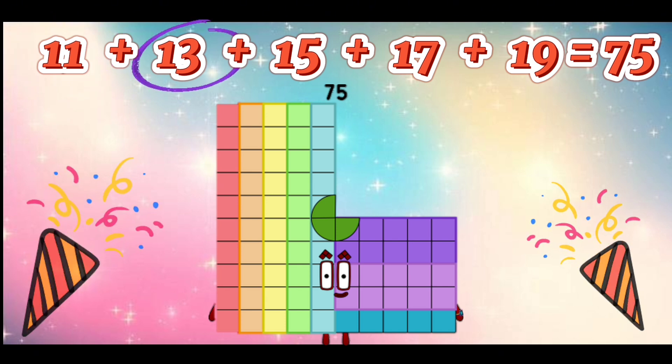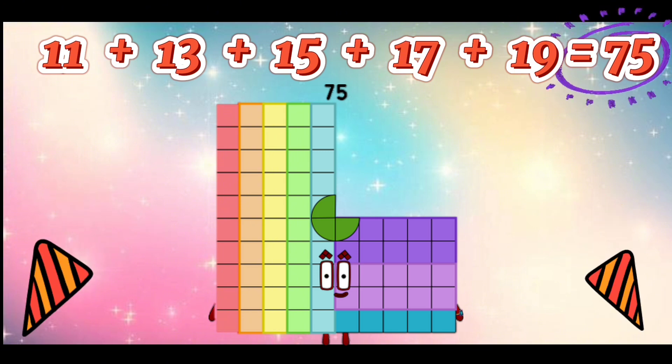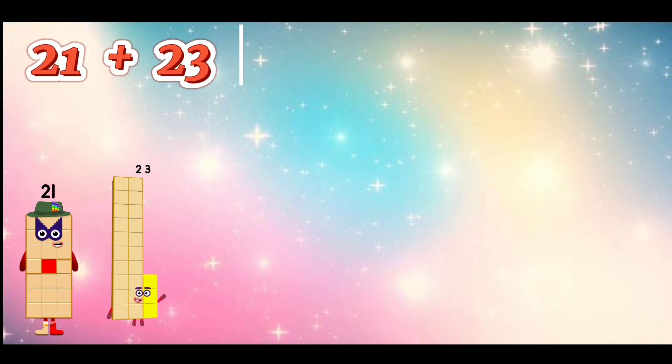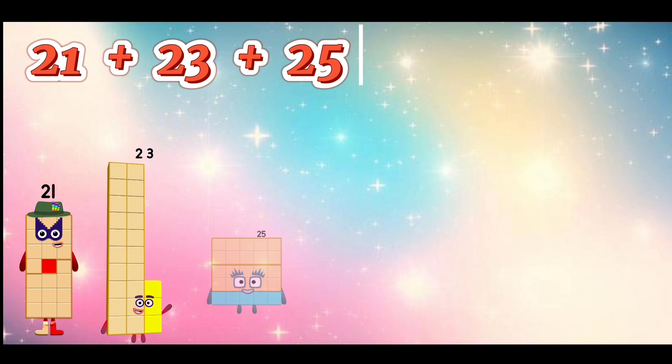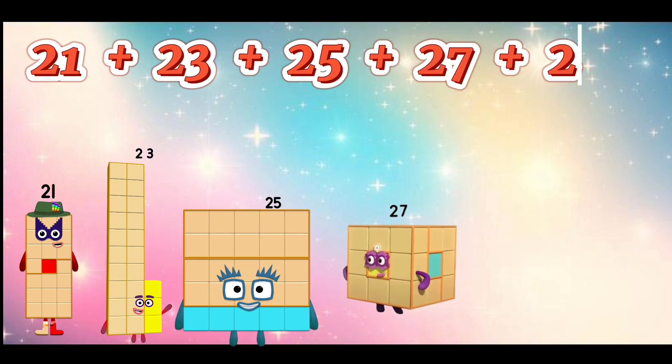Let's repeat. 11 plus 13 plus 15 plus 17 plus 19 is equal to 75. 21 plus 23 plus 25 plus 27